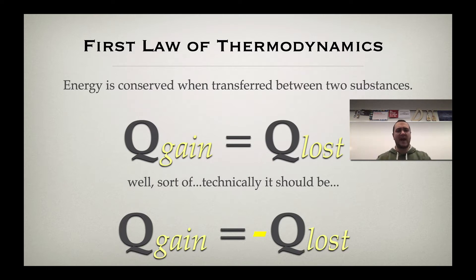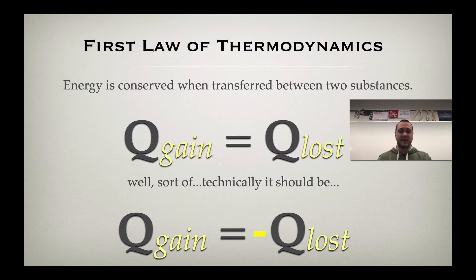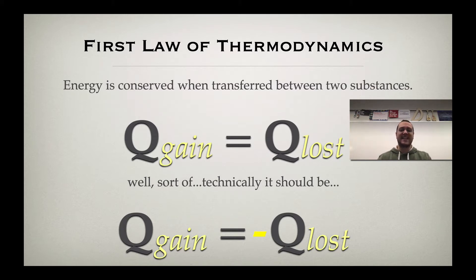But we know mathematically that's not going to be sound, right? Because if you gain thermal energy, your temperature increases, and if you lose thermal energy, your temperature has decreased. So technically, that would be read as the energy gained equals the negative amount of energy lost. And we know a positive cannot equal a negative. So by technicality, if you look at that bottom formula, the thermal energy gained is equal to the negative of the thermal energy lost.